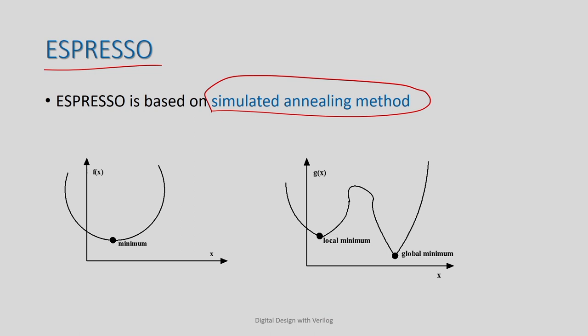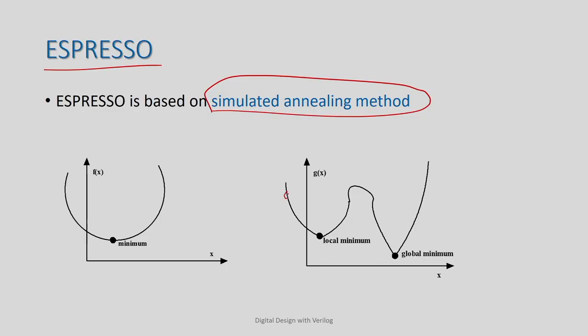You think about starting with an initial solution. In a switching function minimization context, you can think of the minterms present in the function as the implicants — they are basically the solution that you have. Initially, you just have all these ones as the solution. That is your starting point. You can start from this point and then combine two 1s into one, or take four 1s and combine them into one bigger cube, and so on. This way, you are reducing the number of product terms as well as the literals.